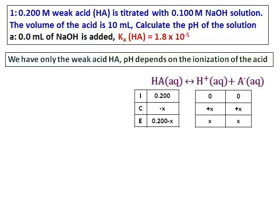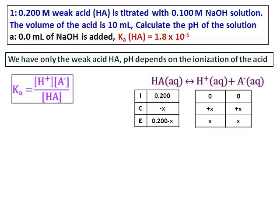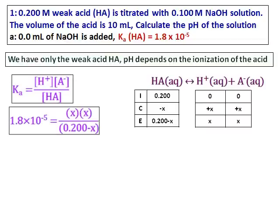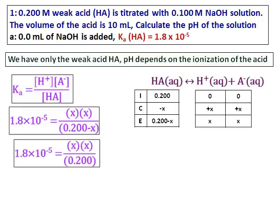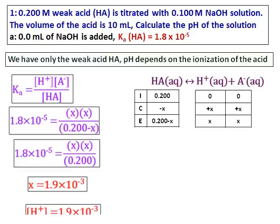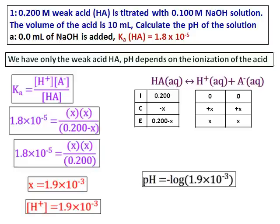After the ICE table is set up, write down the acid ionization constant and substitute the values for hydrogen ions, A minus, and HA. This is a small K approximation. Based on that, I can calculate the value of x, and x is the concentration of hydrogen ion. Using the equation for pH, I can calculate the value of pH.